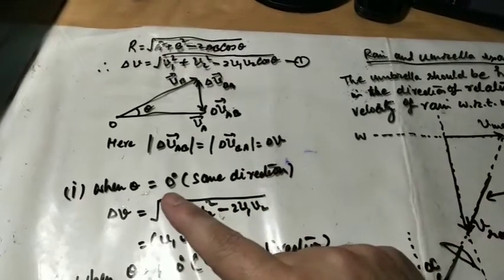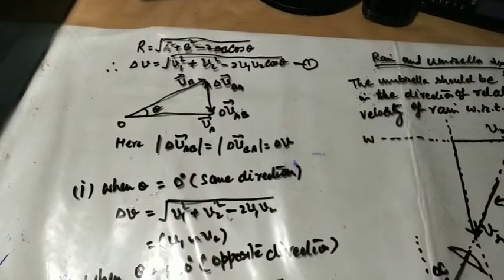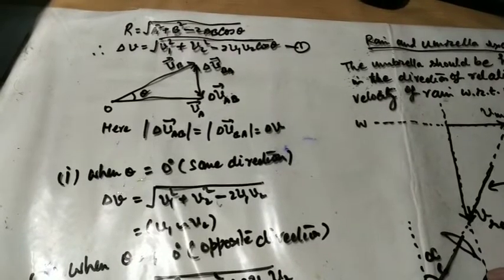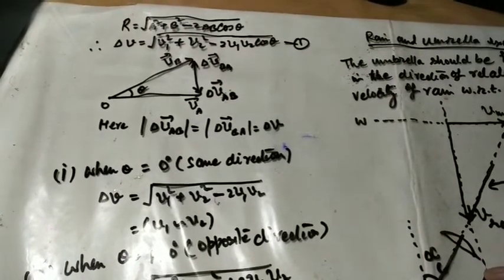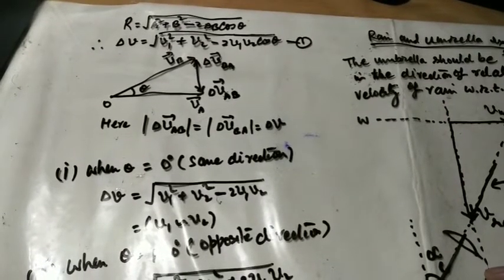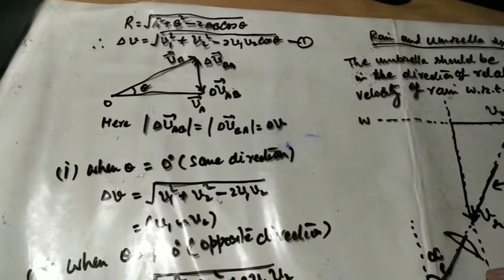When two velocities are in same direction, theta is equal to zero degree. Similarly, in that condition relative velocity magnitude will be difference of two velocities.